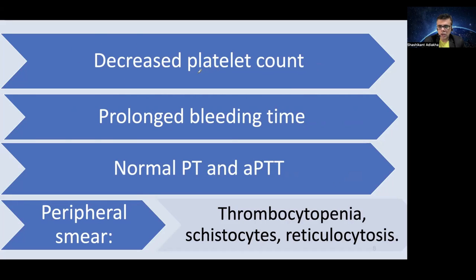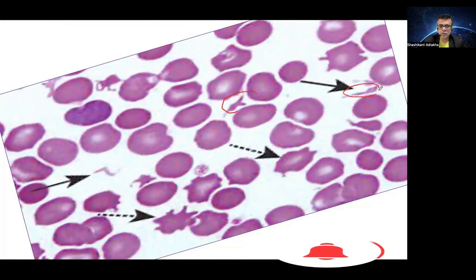Lab manifestations include decreased platelet count and prolonged bleeding time due to platelet deficiency. PT and aPTT are normal because there is no abnormality of the extrinsic or intrinsic pathways. Peripheral smear reveals thrombocytopenia, schistocytes, and reticulocytes. Reticulocytosis is seen due to increased hemolysis, driving increased reticulocyte generation from the bone marrow. In this picture, fragmented RBCs are visible, along with thrombocytopenia, and polychromatic RBCs equivalent to reticulocytes.